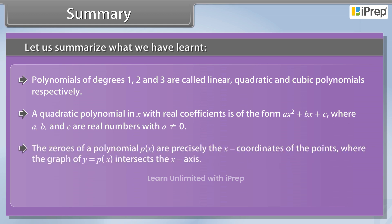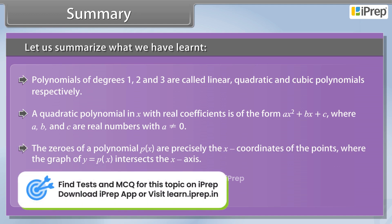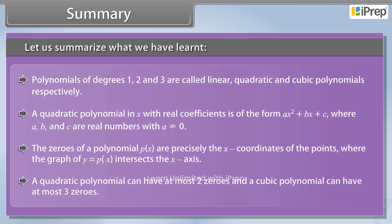The zeros of a polynomial PX are precisely the x-coordinates of the points where the graph of Y equals PX intersects the x-axis. A quadratic polynomial can have at most two zeros and a cubic polynomial can have at most three zeros.